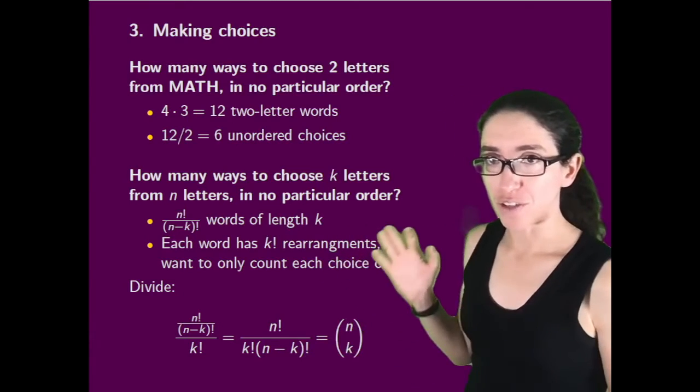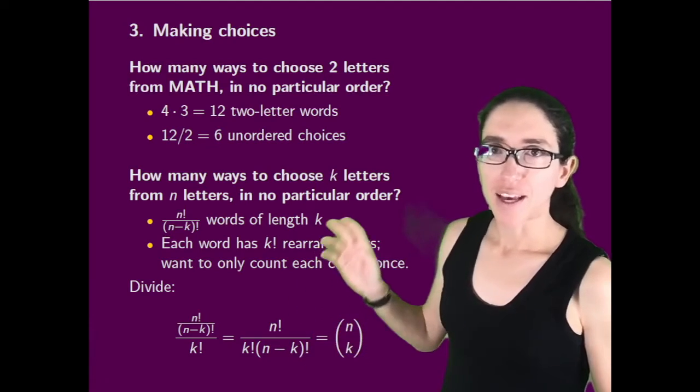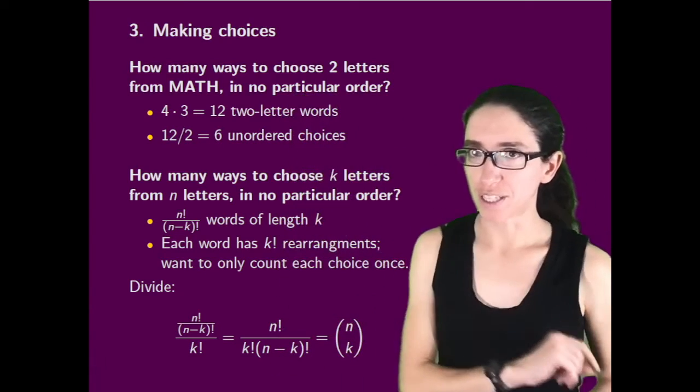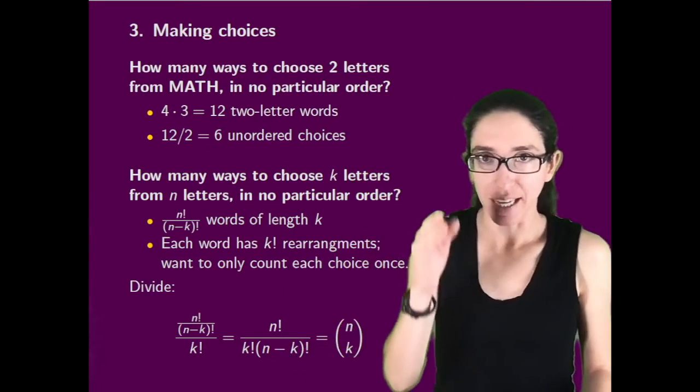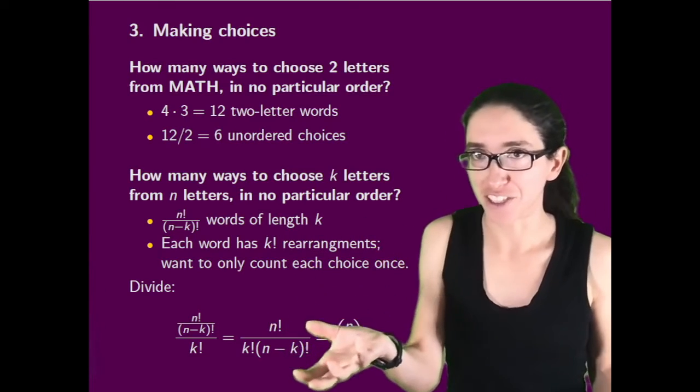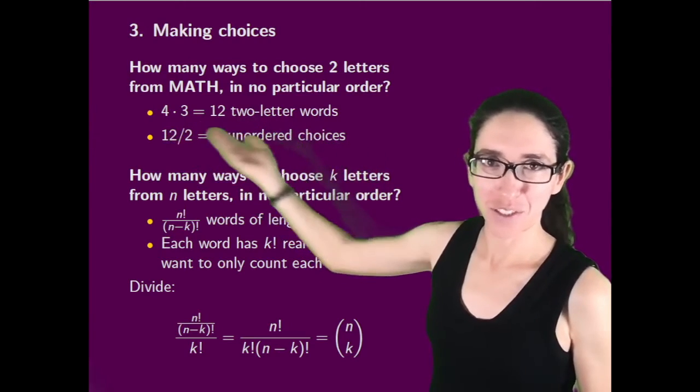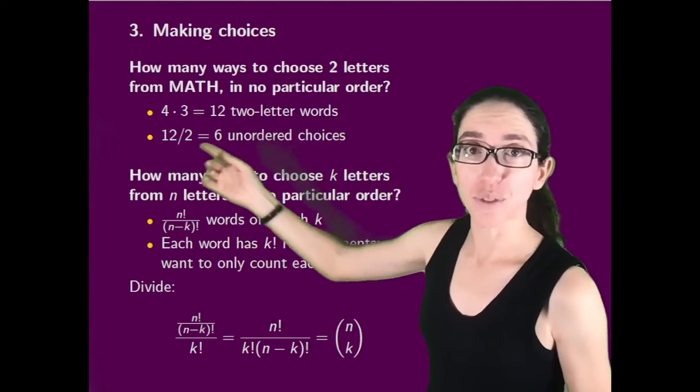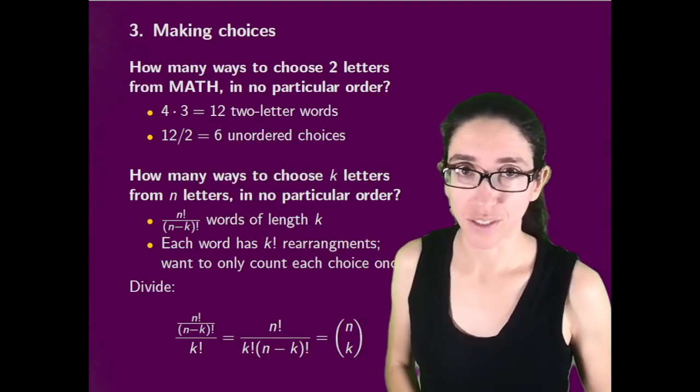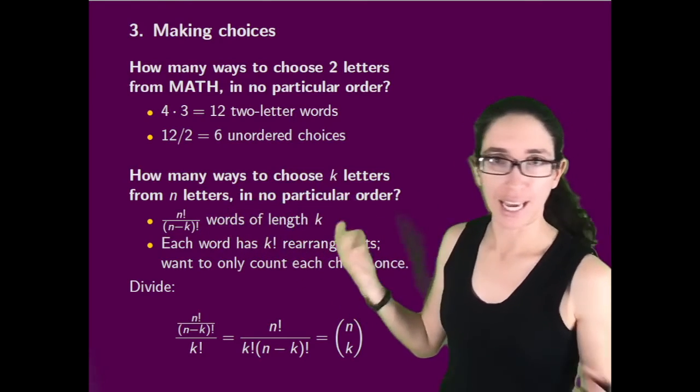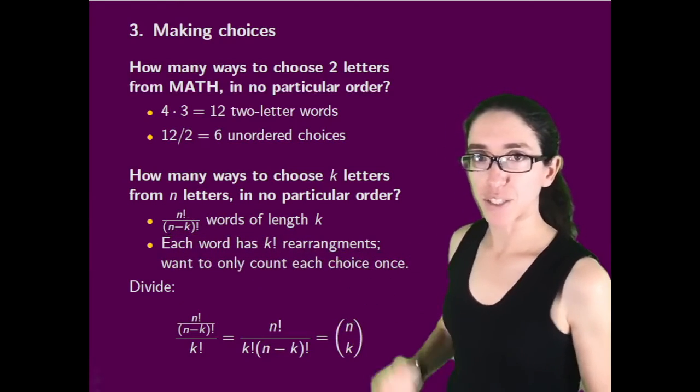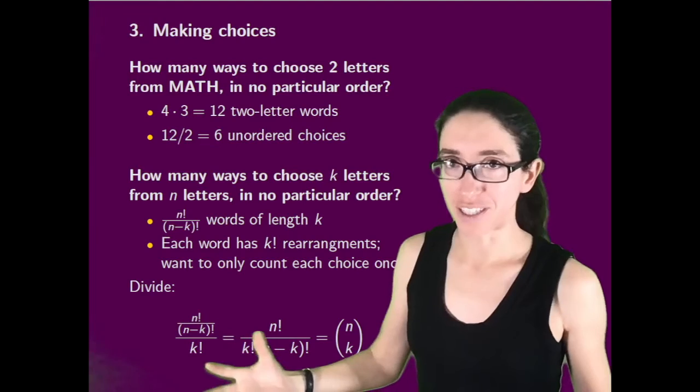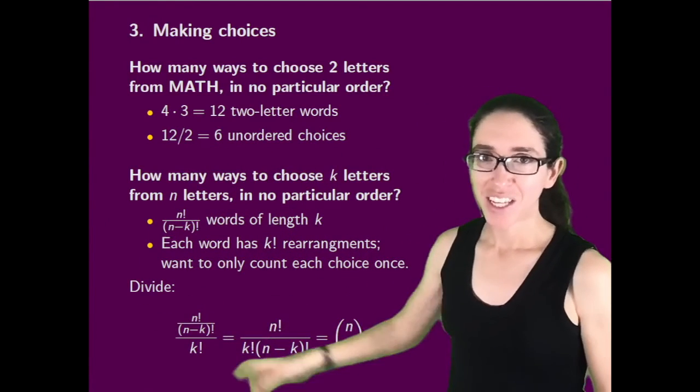We can use that formula to solve our third classical counting problem, which is making choices. This is really where the term combinatorics comes up - combinations of things. How many ways can we choose two letters from math in no particular order? I just want to pick the a and the t, but I'm not saying it's the word at or ta, it's just the bucket containing the letters a and t. First count the two-letter words in four times three ways. But at and ta, we counted that twice. We only want to count it once. We counted everything twice, so we divide our total possibilities by two. We have only six unordered choices.